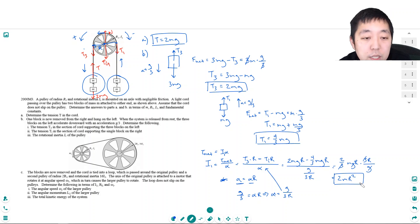So that's B. That's T1, T3, and I1. Part C: The blocks are now removed and the cord is tied in a loop which is passed around the original pulley and a second pulley of radius 2R1 and rotational inertia 16I1. The axis of the original pulley is attached to a motor that rotates at angular speed omega. So this is rotating at angular speed omega, which causes the larger pulley to rotate. The loop does not slip on the pulleys. Determine the following in terms of I1, R1, omega 1: The angular speed omega 2 of the larger pulley.